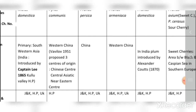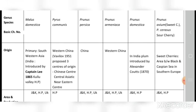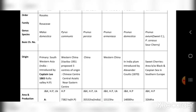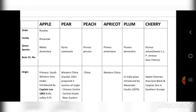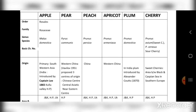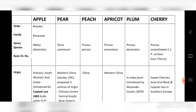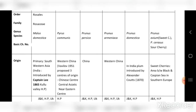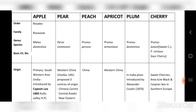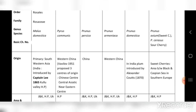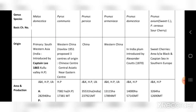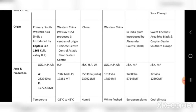Peach originates from China; apricot from western China; plum from India — introduced by Alexander Kautz in 1870. Sweet cherry originates from the area between the Black Sea and Caspian Sea in southern Europe.